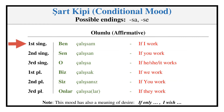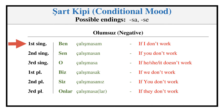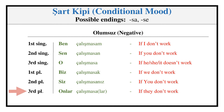Conditional Mood — Affirmative: ÇALIŞSAM, ÇALIŞSAN, ÇALIŞSA, ÇALIŞSAK, ÇALIŞSANIZ, ÇALIŞSALAR. Negative: ÇALIŞMASAM, ÇALIŞMASAN, ÇALIŞMASA, ÇALIŞMASAK, ÇALIŞMASANIZ, ÇALIŞMASALAR.